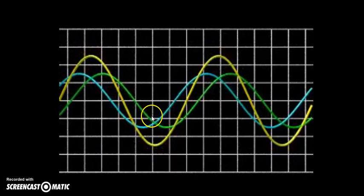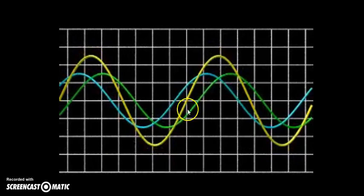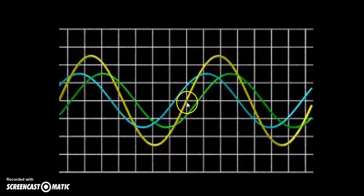In this diagram there are two waves — the blue and the green — and the yellow is the resultant of these two waves. These two waves are moving in opposite directions, and because of their interference a standing wave is formed.